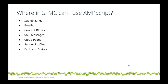AMPscript is not only for emails. You can use AMPscript in subject lines, content blocks — creating reusable AMPscript snippets using Content Builder — in SMS messages with Mobile Connect, in Cloud Pages if you're building a preference center or microsite solution, in sender profiles to dynamically build the from email address and from name, and in exclusion scripts to exclude people from an email send.